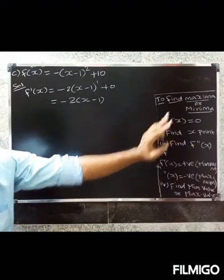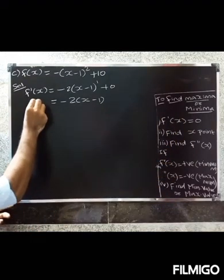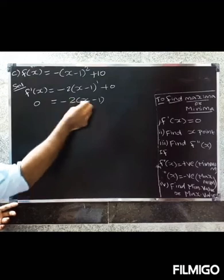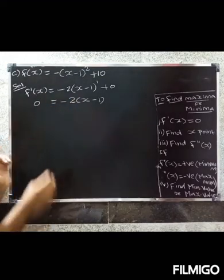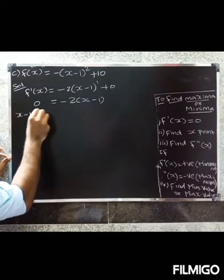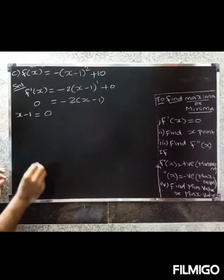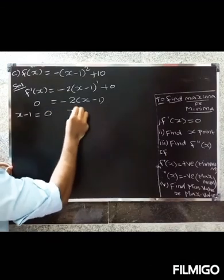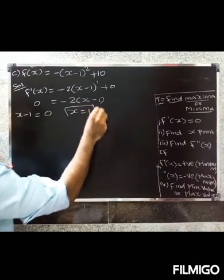Set f'(x) = 0 to find the critical point. So -2(x - 1) = 0, giving x - 1 = 0 divided by -2 = 0, therefore x = 1.